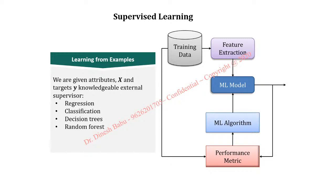Under supervised learning — where we have dependent and independent variables — we have different algorithms like regression, classification, decision tree, and random forest. These are all algorithms that come under the supervised learning category.